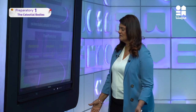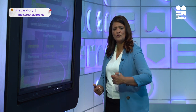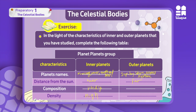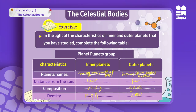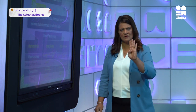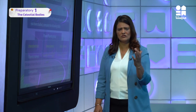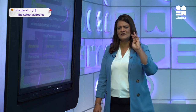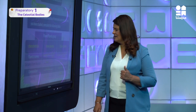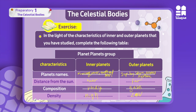The outer planets are far from the sun - there are four planets and the asteroid belt before them, so they are far. Their composition is mostly gases. Their density is low. So: inner planets = near the sun, rocky; outer planets = far from the sun, gaseous. The outer four are Jupiter, Saturn, Uranus, and Neptune.